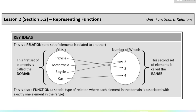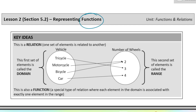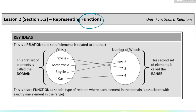We're doing 5.2 today. This is on representing functions. A function is a special type of relation. A relation is essentially a relationship — it's a relationship between two sets of elements. Those elements could be anything: physical objects, numbers, letters, symbols, anything.